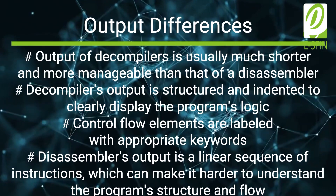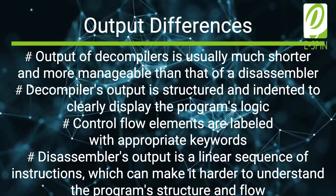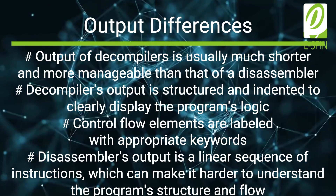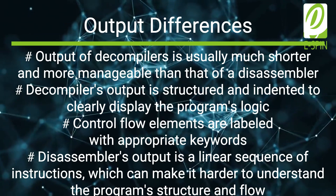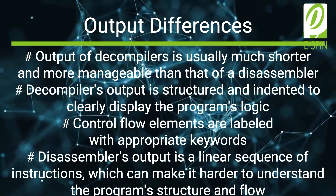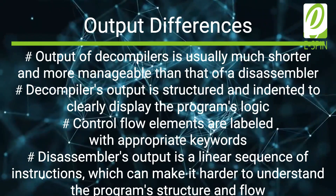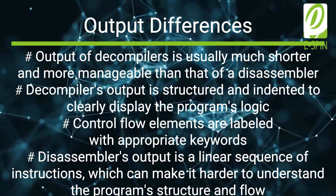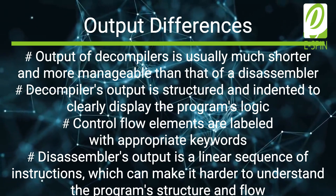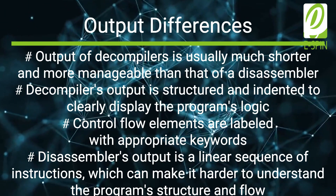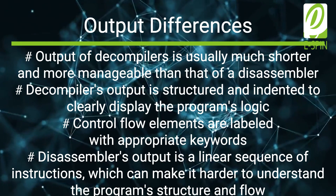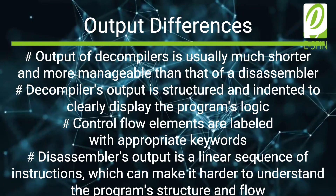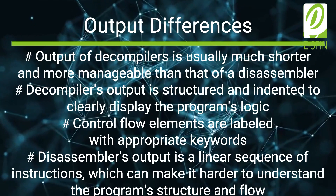Secondly, the output of a decompiler is usually much shorter and more manageable than that of a disassembler. This is because a decompiler's output is structured and indented to clearly display the program's logic. Control flow elements such as if statements, loops, and switch statements are labeled with appropriate keywords, making it easy to see the program structure at a glance. In contrast, a disassembler's output is a linear sequence of instructions, which can make it harder to understand the program structure and flow.